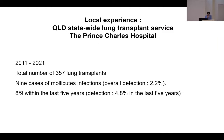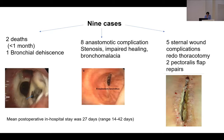Between 2011 and 2021, we performed 357 lung transplants and had nine cases of molecule infections detected — an overall detection rate of 2.2%. Interestingly, eight of these nine cases were detected in the last five years, so the detection rate has risen to 4.8%. There was significant morbidity, and two patients died within one month of transplant. One death was directly related to molecule infection — he had complete bronchial dehiscence, visible on bronchoscopy, where the anastomosis completely disintegrated and fell apart.